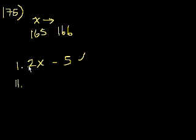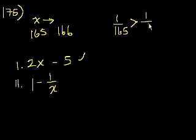Statement 2: 1 minus 1/x. So 1/165 is greater than 1/166. That term gets smaller as we go from 165 to 166. But we're subtracting that term. So if we're subtracting a term that's getting smaller, the whole value is actually going to get larger. We're subtracting a smaller number. So 1 minus 1/166 is larger than 1 minus 1/165. This also gets larger.